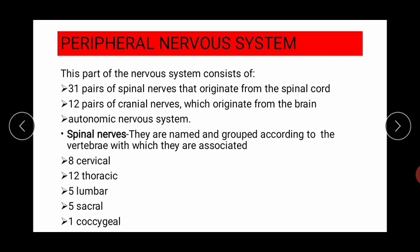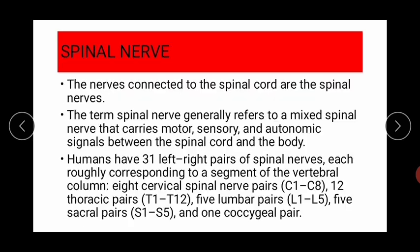Good afternoon students. Today we will learn about the peripheral nervous system. Earlier I taught you about the parts of the peripheral nervous system: spinal nerves, cranial nerves, and the autonomic nervous system. Today we will learn about the spinal nerves, starting from the introduction. The nerves connected to the spinal cord are called spinal nerves.